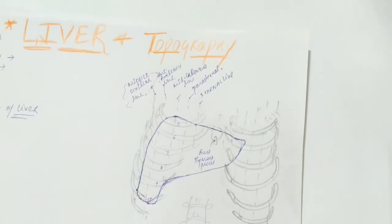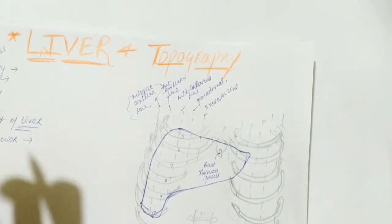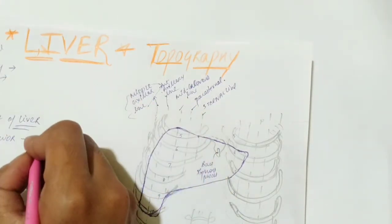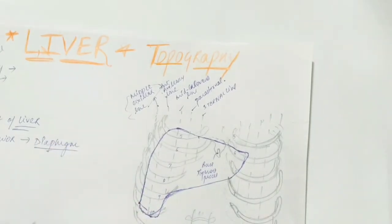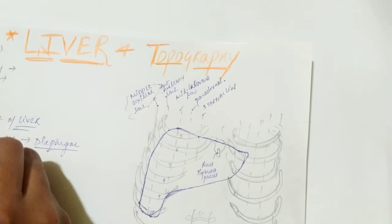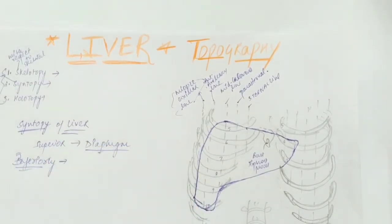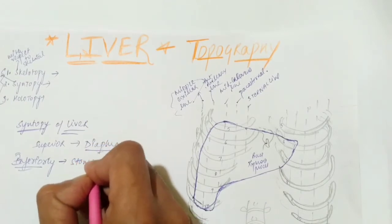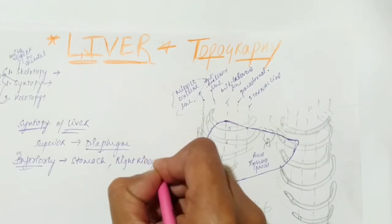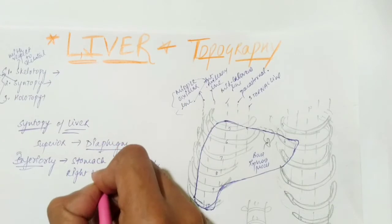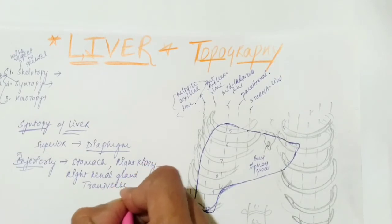For syntopy, what are the organs present above or below your liver? Superiorly, the liver is covered by your diaphragm. Inferiorly, there are many abdominal organs — first of all, there will be the stomach. There will also be the right kidney and the right adrenal gland. And there will be some part of the transverse colon.